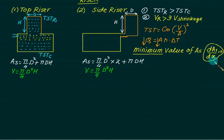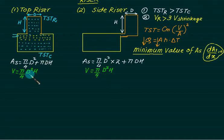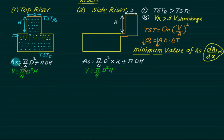We want to differentiate with respect to one variable only. Here we have a function of area in two variables — diameter and height. To convert two variables into one, we use the fact that volume is constant. From V = (π/4)D²H, we get H = 4V/(πD²). We substitute this into the surface area equation so that A_s becomes a function of diameter alone. Substituting H, the top riser surface area becomes: A_s = (π/4)D² + πD × (4V/πD²) = (π/4)D² + 4V/D.